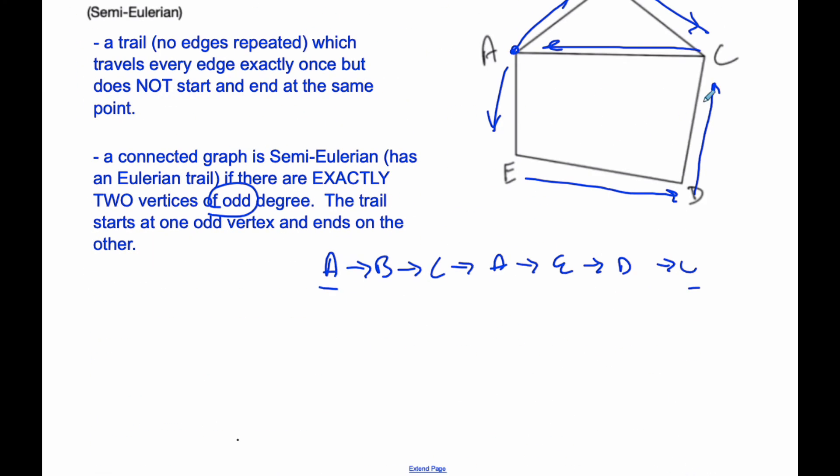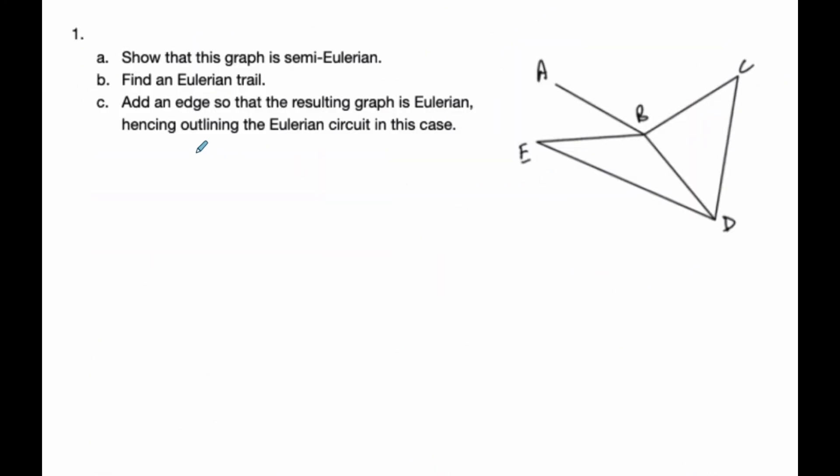So let's try an example here. We have this graph here, show that this graph is semi-Eulerian. Well, if I consider this, I can see that this is an odd degree of 1, and this is also an odd degree of 3, and so therefore, A and D are odd. So it is semi-Eulerian.